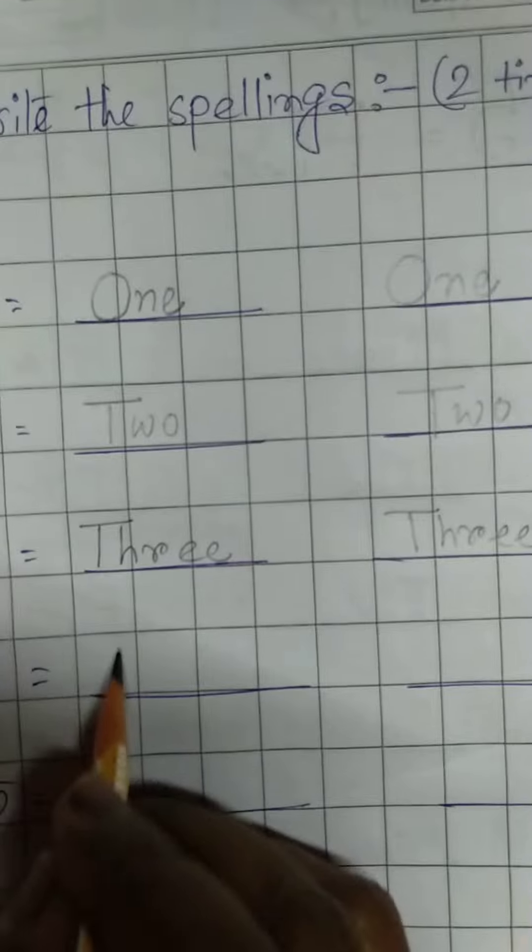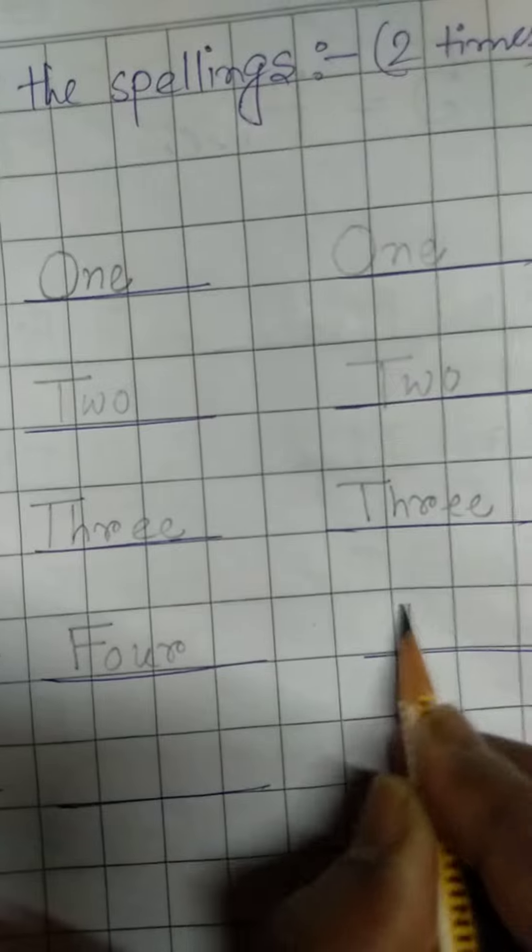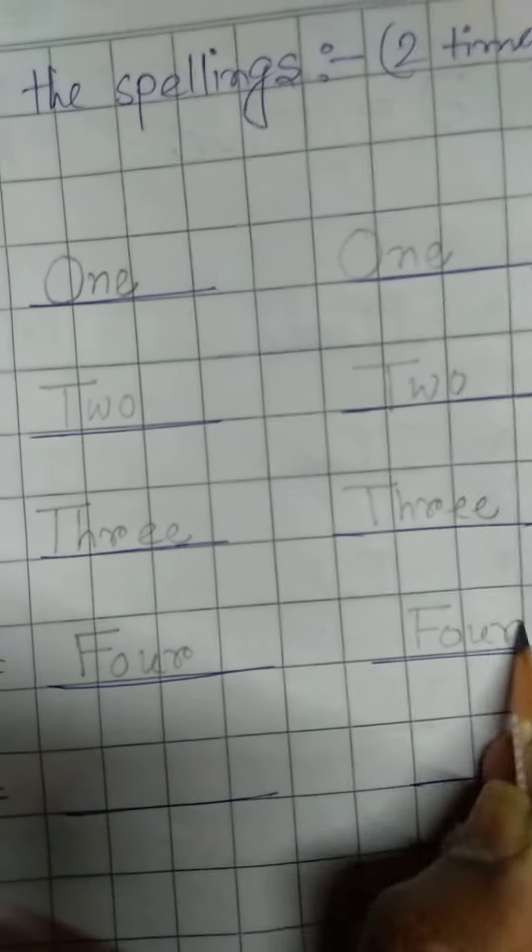This is number 4. What is the spelling of 4? F-O-U-R. What is the spelling of 4? F-O-U-R.